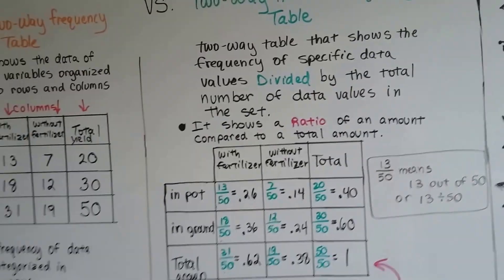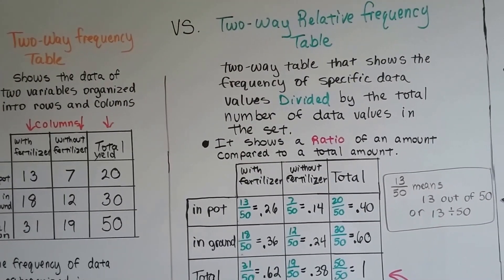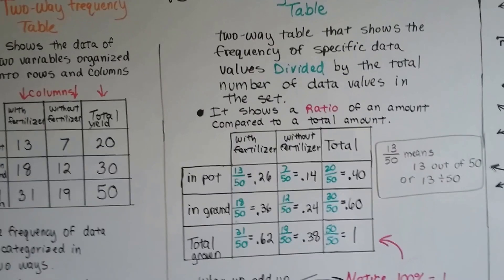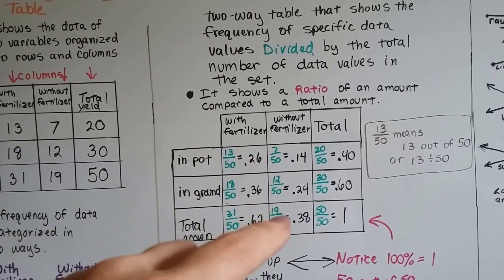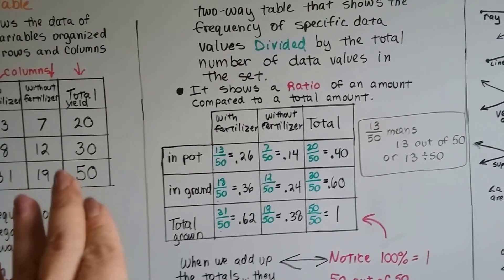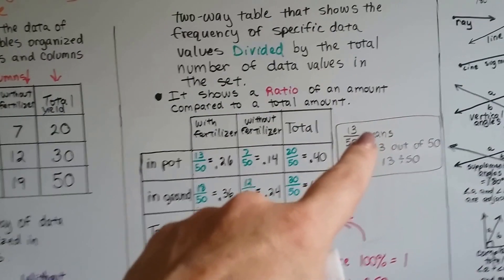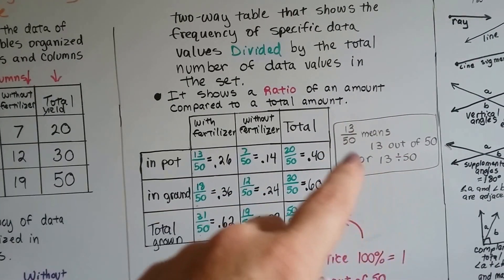So, it's going to show the frequency of specific data values divided by the total number of data values in the set. So if there's 50 in the set, then each of these are divided by 50. See that? Because remember, fractions are just little division problems. When you see 13 over 50, it means 13 out of 50 or 13 divided by 50.